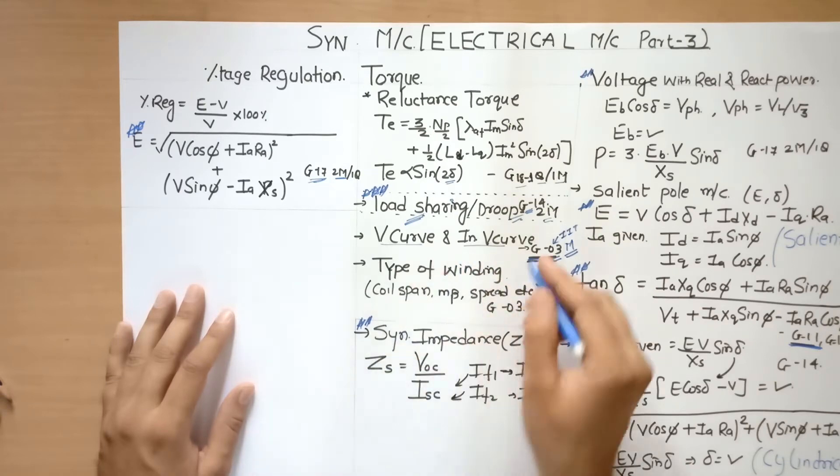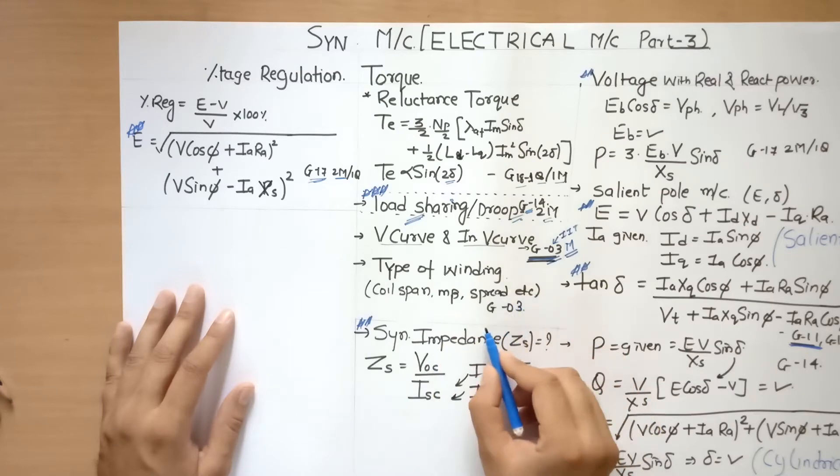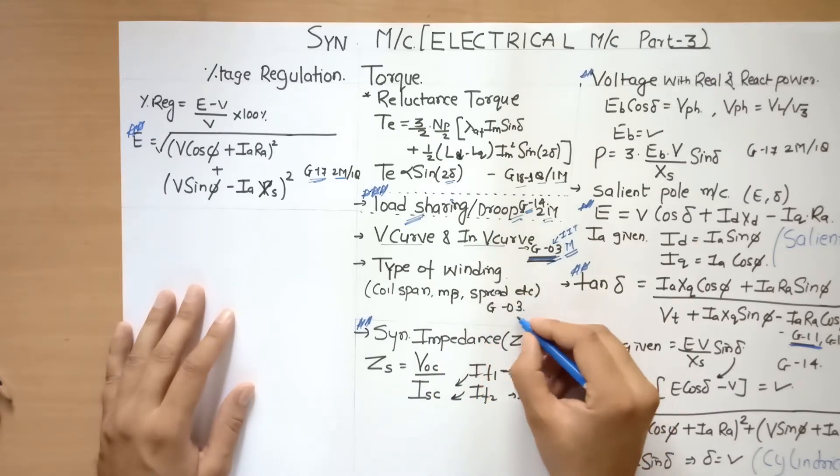This 2003 was made by IIT Madras, so you have to be very careful while learning this. You can't forget this. Type of winding, coil span, m-beta, spread, etc. was also asked in gate 2003.